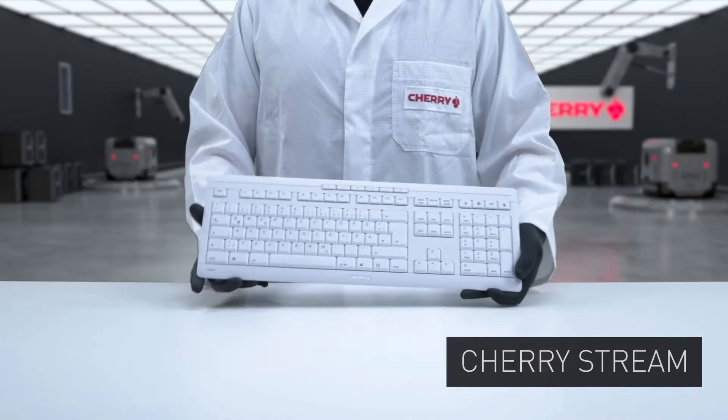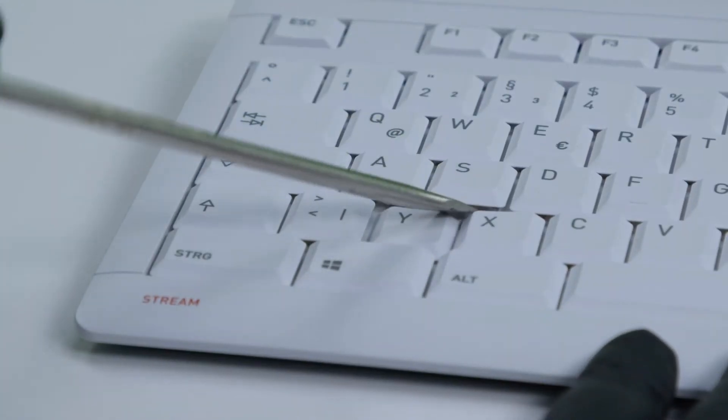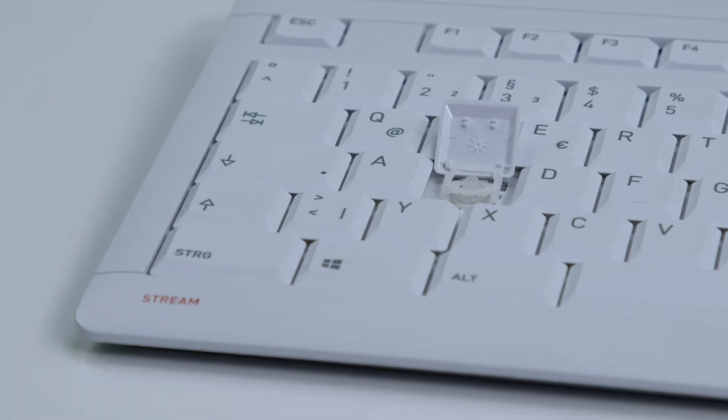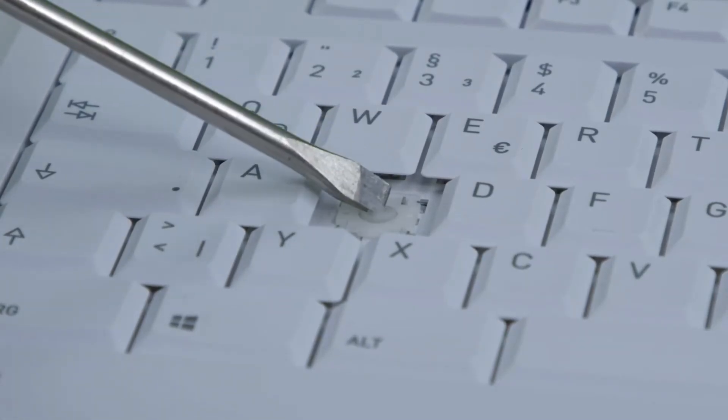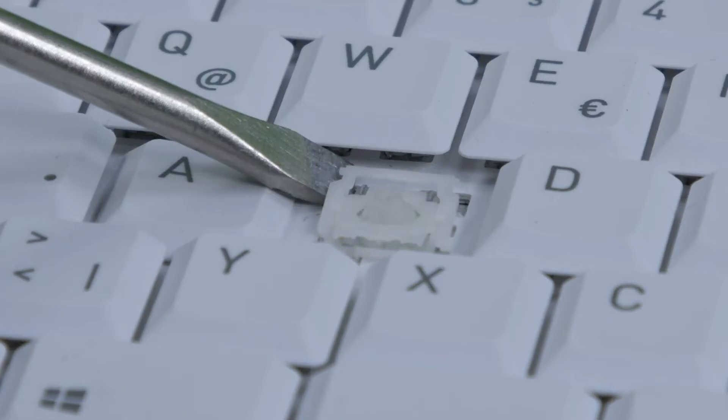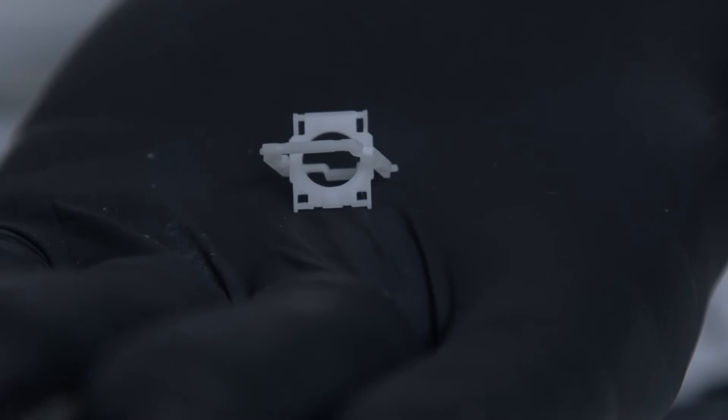Electronically speaking, scissor keyboards like the Cherry Stream are identical to those that use membrane technology. This is because scissor keyboards also have rubber domes under their keycaps, which close the contacts on the switching foil when pressed. The key difference to the rubber dome keyboard is the scissor module underneath the keycap.